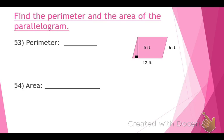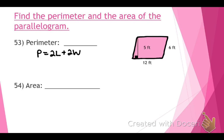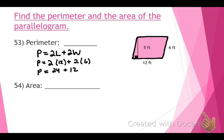Find the perimeter and area of the parallelogram. The perimeter formula is P equals 2 times length plus 2 times width. Remember: finding the perimeter means finding the distance around the figure. The length is 12 and the width is 6: 2 times 12 is 24, plus 2 times 6 is 12, giving us 24 plus 12 equals 36 feet. So the perimeter is 36 feet all the way around that parallelogram.